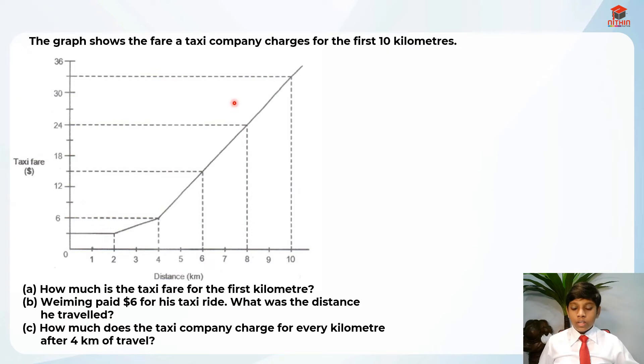This is question 11 and it's testing us on graph and rates. The graph shows the fare a taxi company charges for the first 10 kilometers. So here's the graph and part A asks how much is the taxi fare for the first kilometer? Before that, we need to find what each line represents.